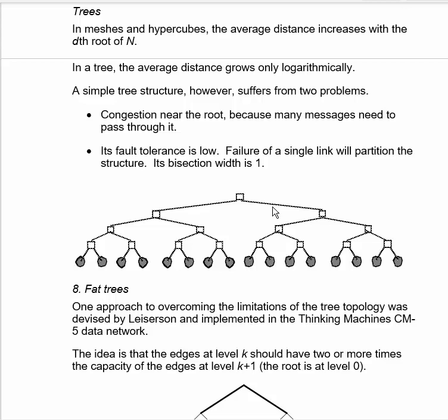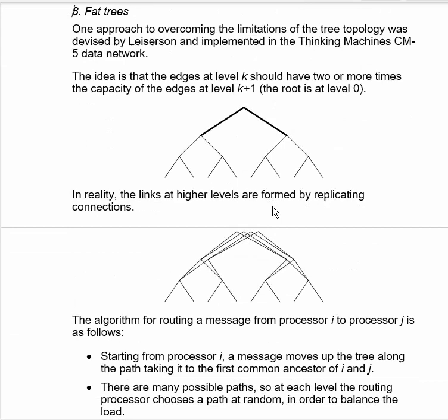We can do a slight modification of a tree to solve these problems. And this modification is called a fat tree, due to Charles Leiserson of MIT, and was implemented in the Thinking Machines CM5 data network, which is like early 1990s.